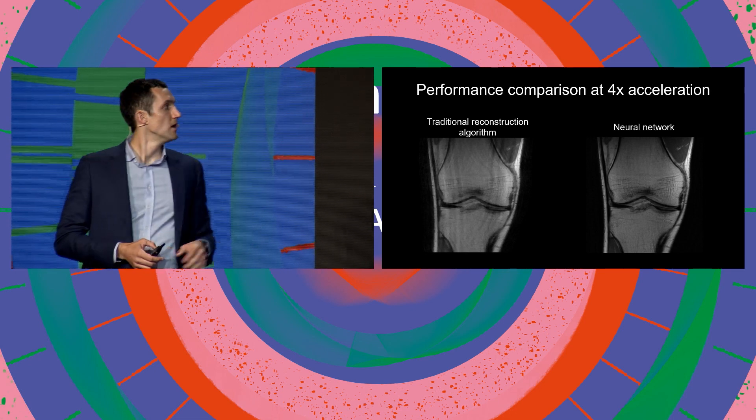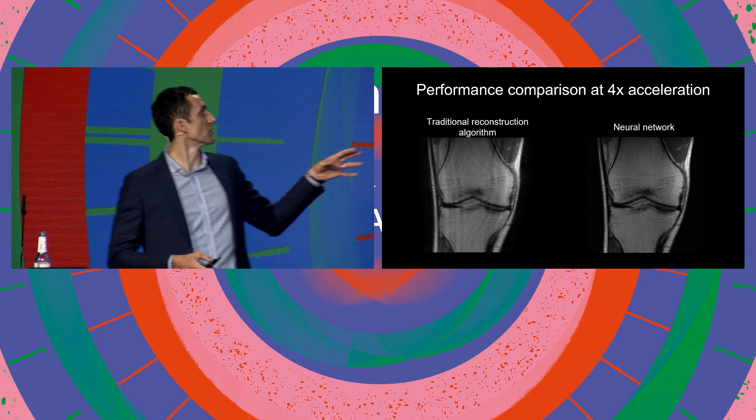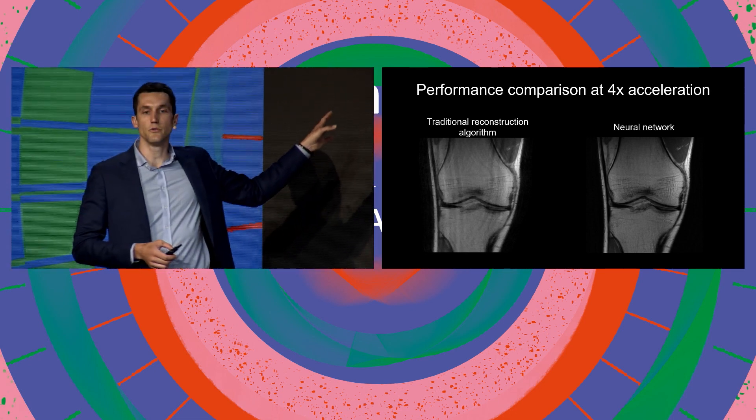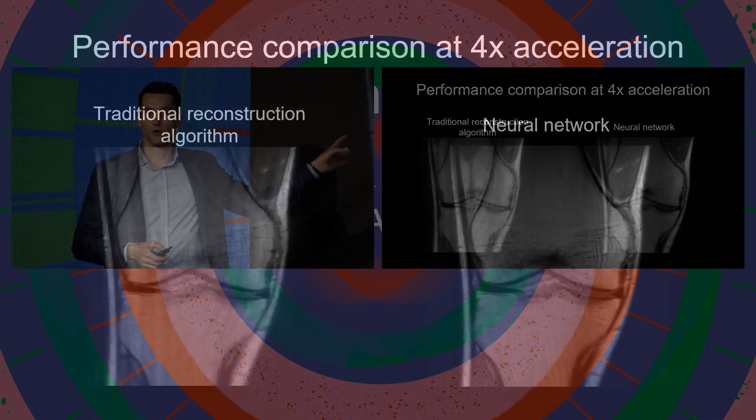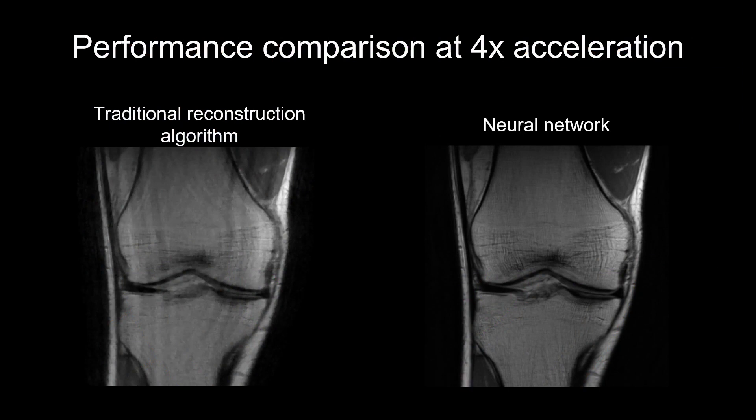Here you see a performance comparison. Here's a traditional reconstruction algorithm — you can see a lot of artifacts and it's very blurry. And here you see what the neural network gives you: a super sharp image. It's also not just super sharp; it's also very accurate. So you really get a significant boost in terms of image quality.